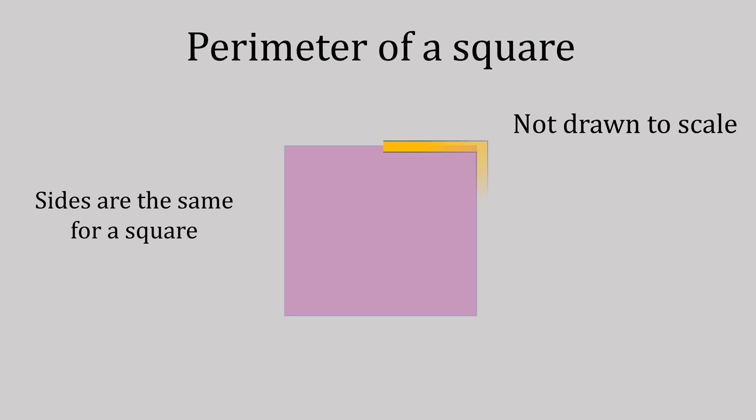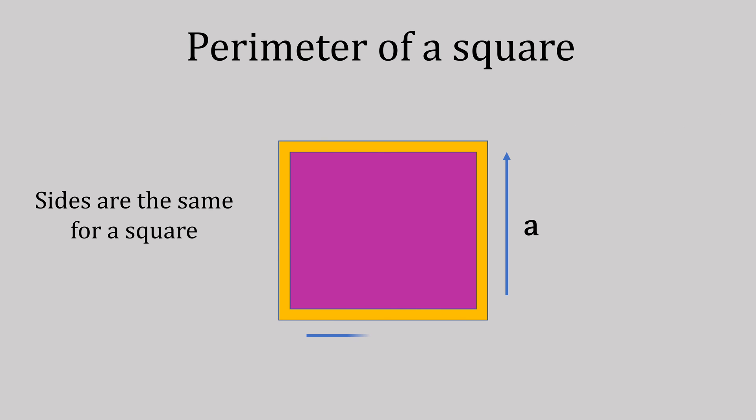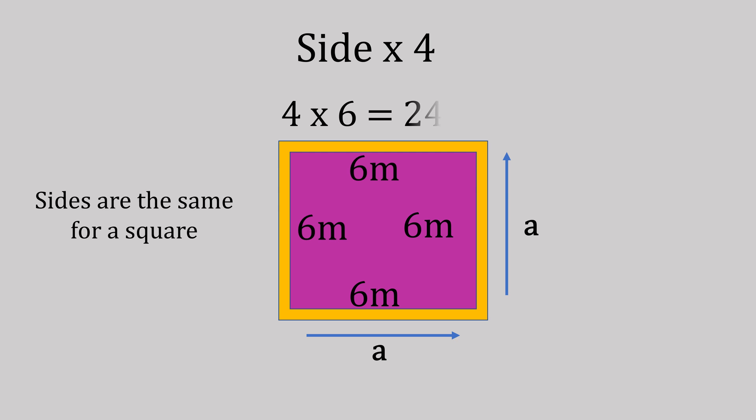So looking at the perimeter then of the square, again we're going to add all the lengths of the sides together, and that's four sides. So we could do 4 times 6, which gives us 24, or 6 plus 6 plus 6 plus 6, also giving us 24.